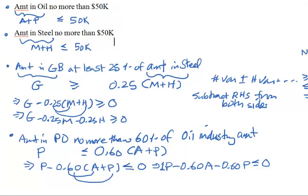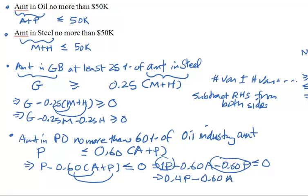There are two terms with P, so we combine them: 1P − 0.6P = 0.4P. The final constraint is: 0.4P − 0.6A ≤ 0.